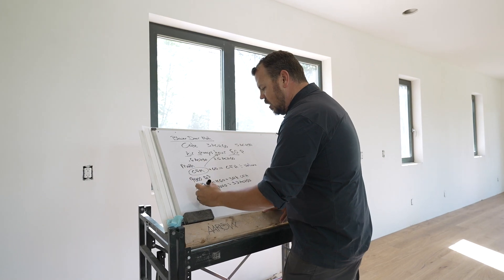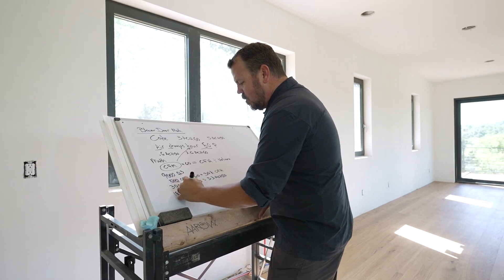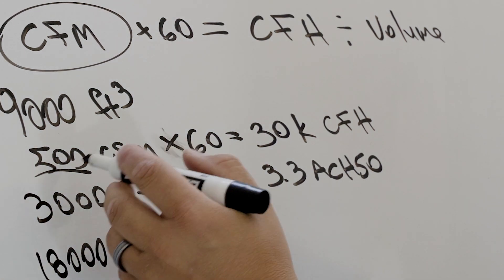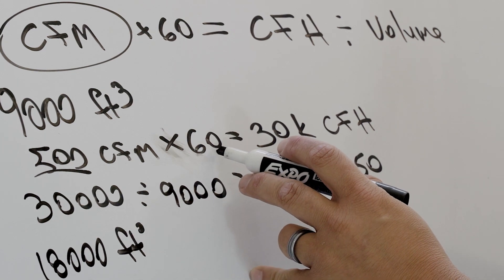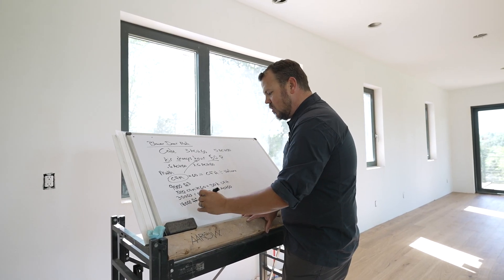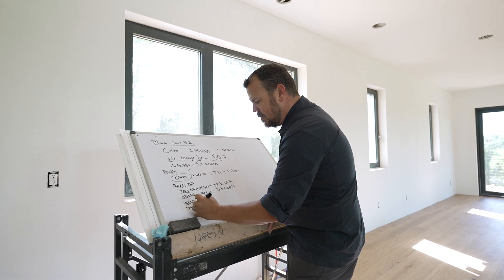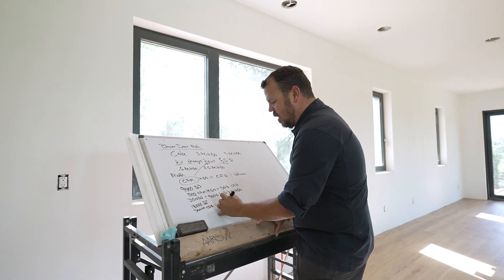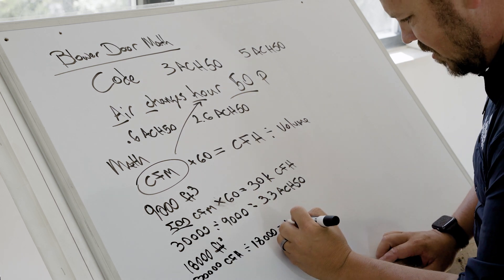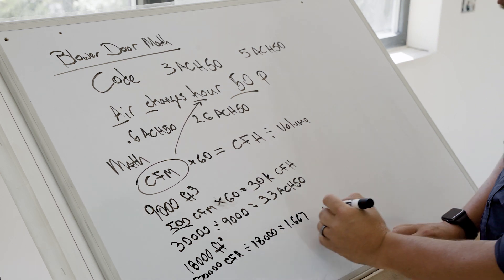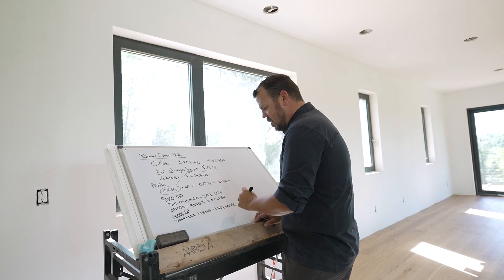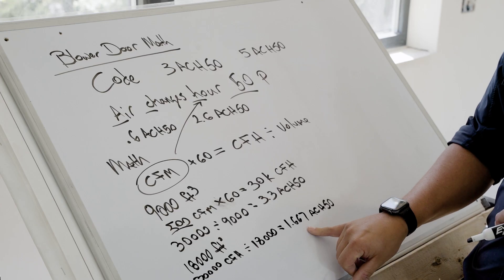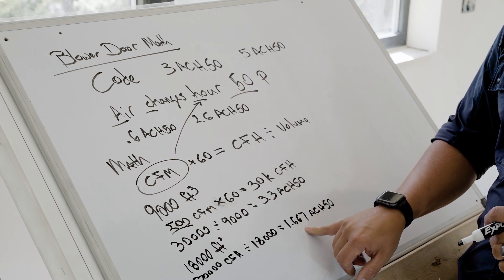Now let's do a 2,000 square foot house. At 9-foot ceilings that gives us 18,000 cubic feet of volume. Using the same 500 CFM of leakage times 60 gives 30,000 cubic feet per hour. Dividing 30,000 by 18,000 gives us approximately 1.67 ACH50. By keeping air leakage the same but doubling the house size, we basically cut the ACH number in half.